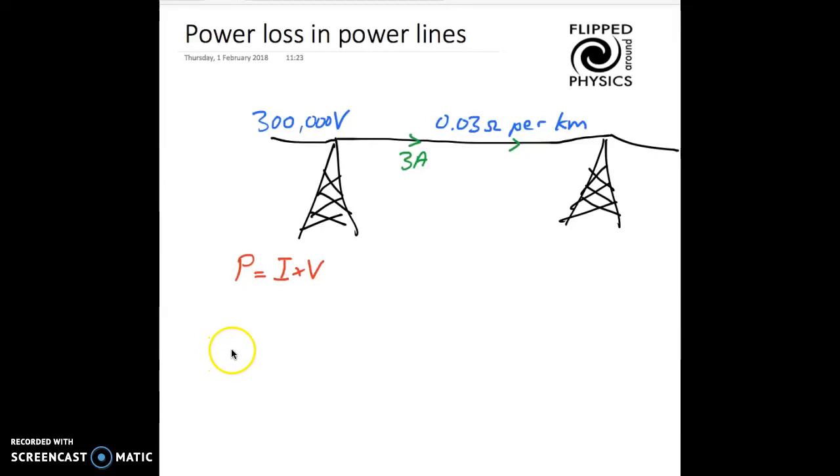In this video we're going to take a look at a common question that comes up, and that concerns the power loss in power lines. So we're talking about power lines in the national grid. Now there's often a confusion between the formula for power, which is P equals current times voltage, and this other one, P equals I squared R.